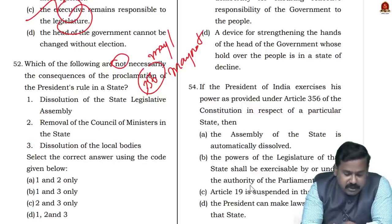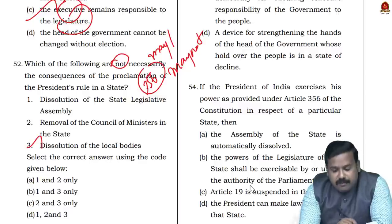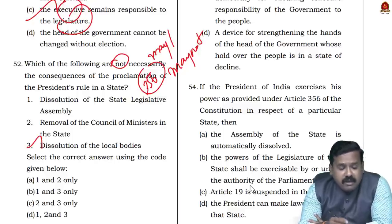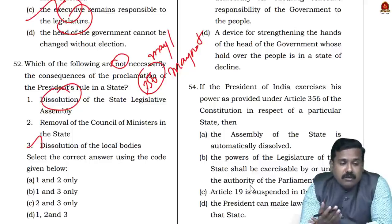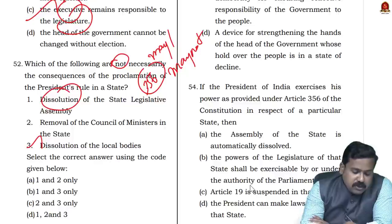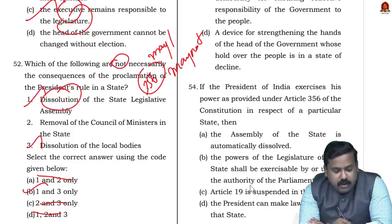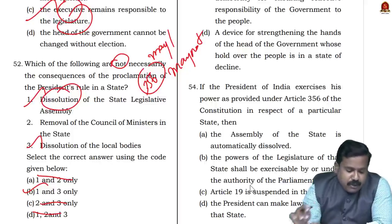On the consequences of President's Rule: dissolution of local bodies is nowhere linked with failure of constitutional machinery — it is not a consequence at all. Dissolution of state legislative assembly is also not necessarily a consequence — it happens only as a last resort when no one is able to form a government. The only certain consequence is that legislative powers of the state are exercised under the authority of Parliament. So the answer is one and three — dissolution of legislative assembly and dissolution of local bodies are both 'not necessarily consequences,' but local bodies' dissolution will never happen. Be very careful with questions asking 'not necessarily a consequence.'